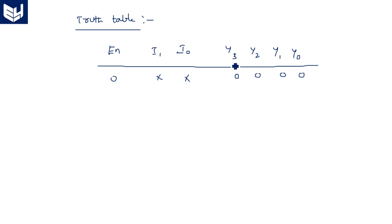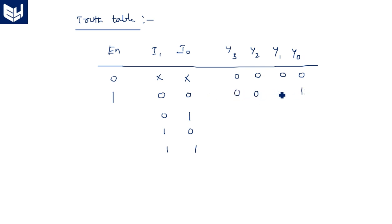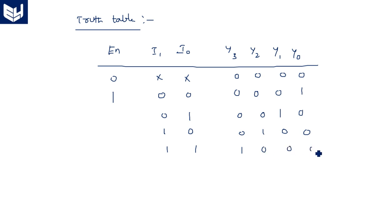When enable is 1, the outputs depend on the input combinations. Input 00 activates Y0 (all others are 0); input 01 activates Y1; input 10 activates Y2; and input 11 activates Y3, with all remaining outputs being 0. So all these operations happen only when the enable pin is equal to 1.